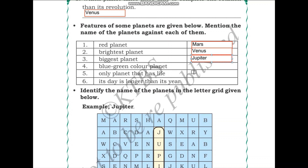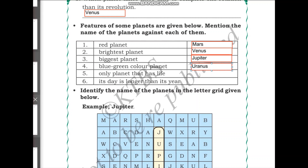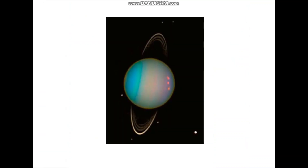Which is the blue-green planet? You might get confused between Uranus and Neptune. Uranus is actually blue-green whereas Neptune is bright blue in color. Here is Uranus — as you can see, it is blue-green in color.